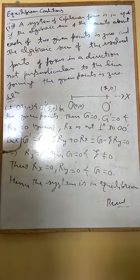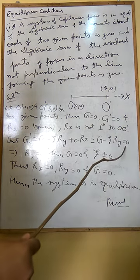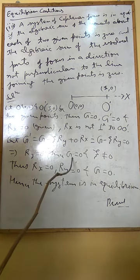So G' can be written as G minus xi*Ry plus zero into Rx, which equals G minus xi*Ry. And this G' is zero, which implies that Ry will be zero since G is zero and xi is not zero.